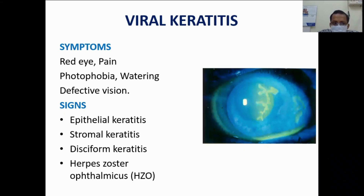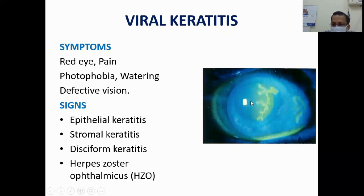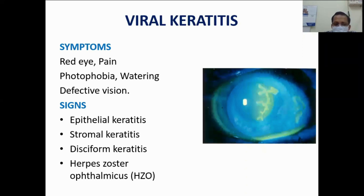Symptoms of viral keratitis include pain and redness as with any inflammation. In the eye, it leads to photophobia, watering, and defective vision. Defective vision depends on the location of the lesion — if the viral lesions are in the center of the cornea there will be defective vision, but if they are in the periphery there will not be defective vision. There will also be redness and congestion.